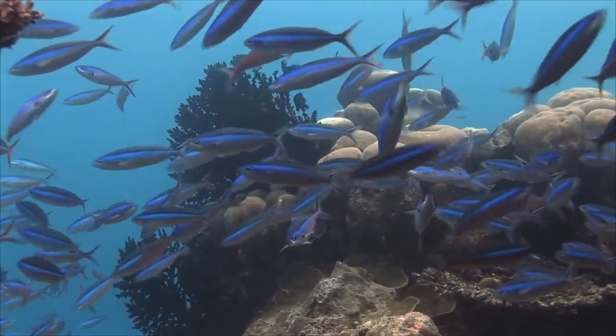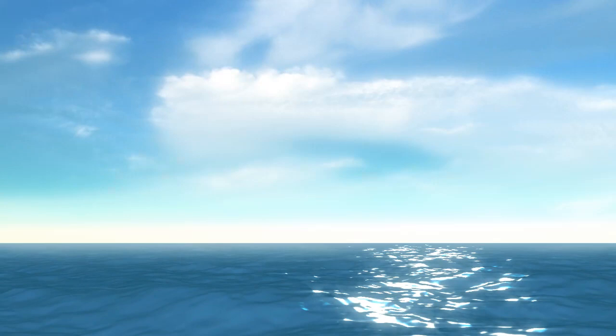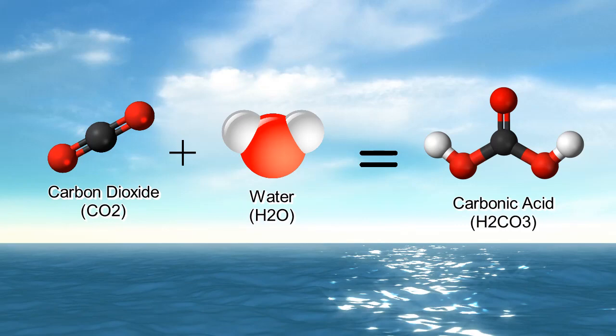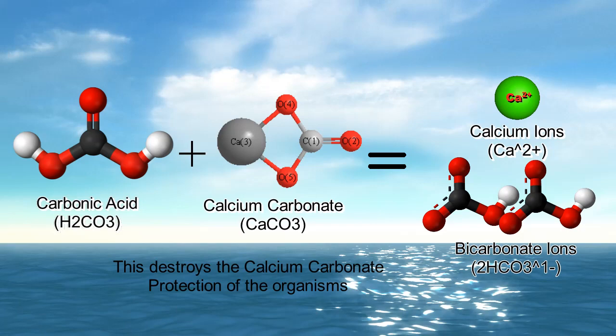Ocean acidification is the ocean's acidity increasing, or its pH decreasing. This happens because of the way carbon dioxide reacts with water. When carbon dioxide reacts with water, it makes carbonic acid, which increases the acidity of the water. Calcium carbonate reacts with the carbonic acid in a way that disintegrates shells.